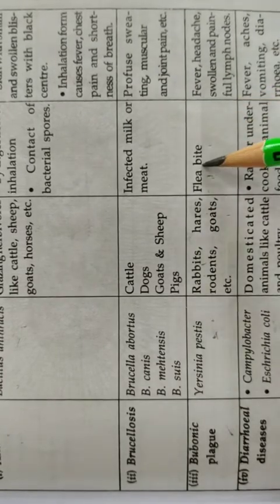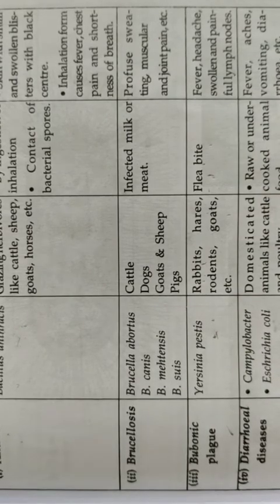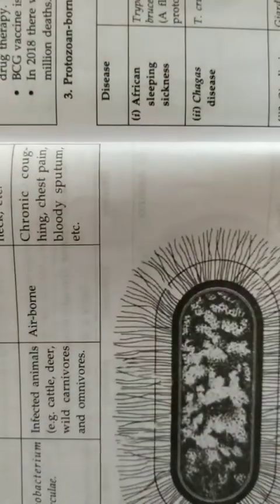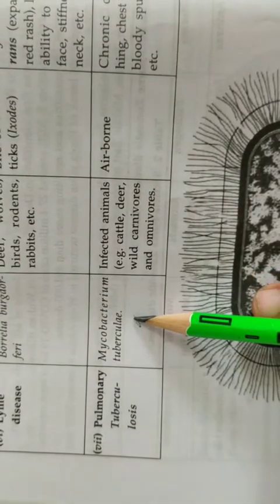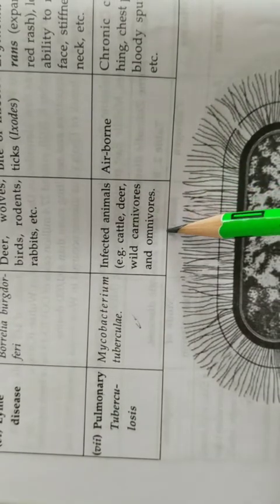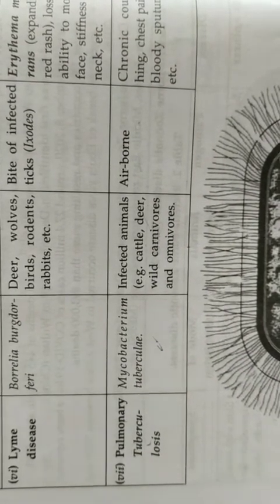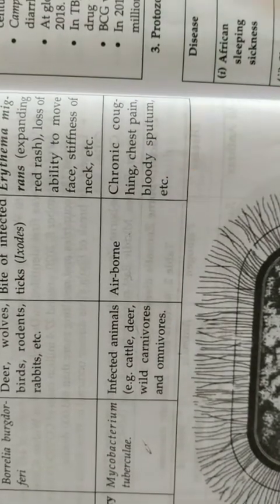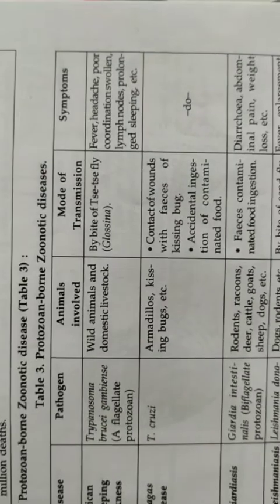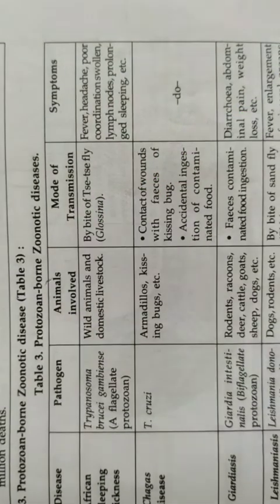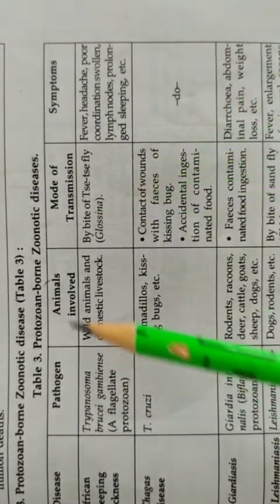If the flea Xenopsylla cheopis bites an infected host and then bites us, we get plague. Plague was very widespread in earlier times. For tuberculosis, the pathogen is Mycobacterium tuberculosis, found in carnivores and cattle. It is an airborne disease — if you are in close contact with these animals, you can also get pulmonary tuberculosis. Symptoms are cough, chest pain, and blood in the sputum. Next is protozoan-borne zoonotic disease — protozoan diseases present in animals that can reach humans.